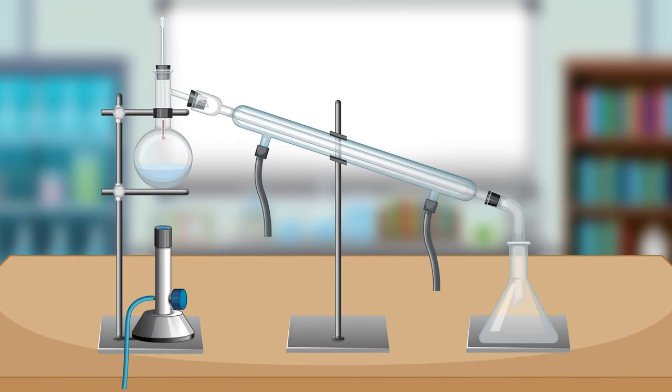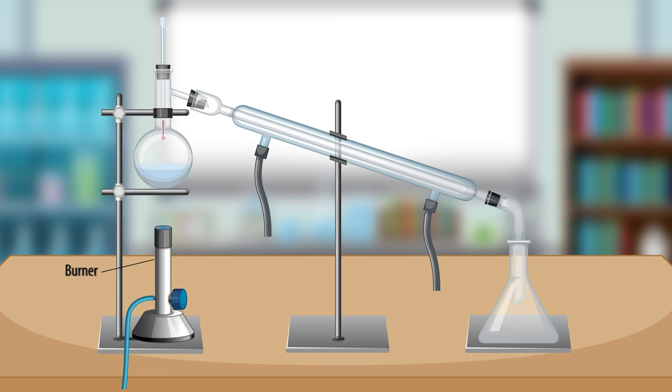Step 1. Set up the distillation apparatus. The typical distillation apparatus consists of a burner, a distillation flask containing the substance we want to distill, a thermometer, a condenser, a receiving flask and some corks to connect the components.